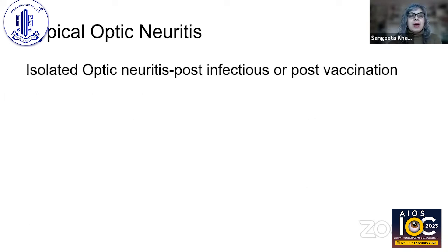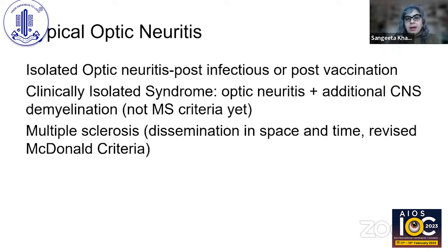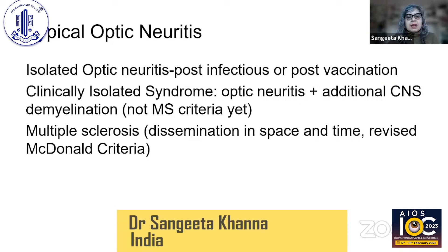There will be decreased visual function, an APD, and mild disc edema — that's classic typical optic neuritis. When we think of typical optic neuritis, we are thinking either an isolated optic neuritis which is post-infectious or post-vaccination, or associated with MS. The patient may not have a full diagnosis of MS but may have white matter demyelination — a clinically isolated syndrome or dissemination in space and time meeting the McDonald criteria for multiple sclerosis.